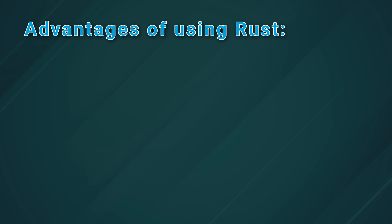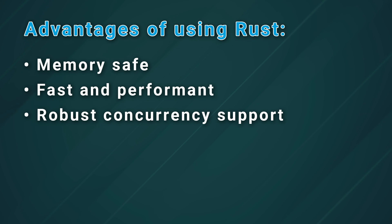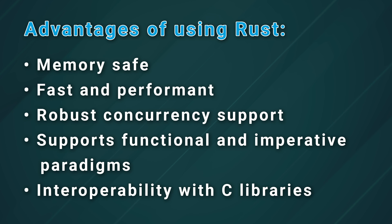Rust is a great option because it's memory safe, it's fast and performant, it has robust concurrency support, it supports functional and imperative paradigms, and it has interoperability with C libraries. Rust is an offshoot of Mozilla research and it's designed for low-level system programming. Many folks swear by Rust and its wide adoption is evidence of that.